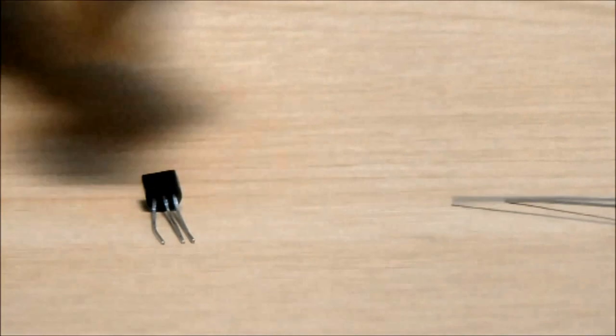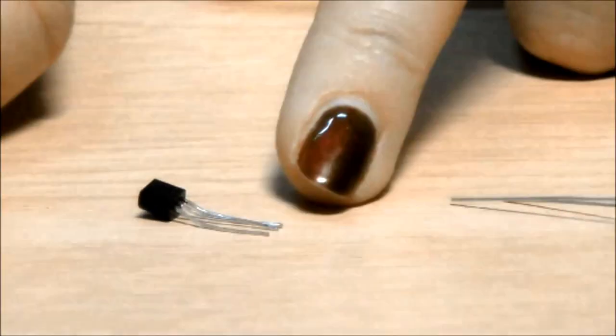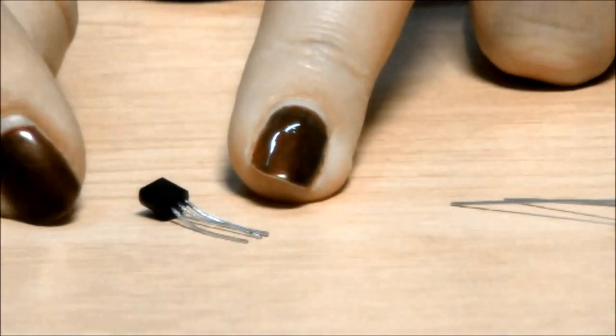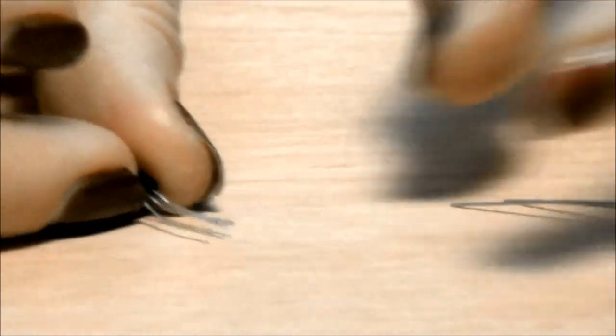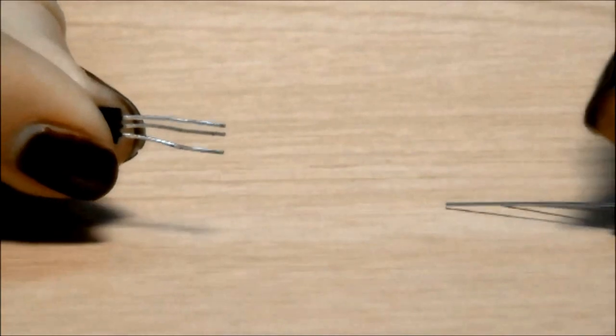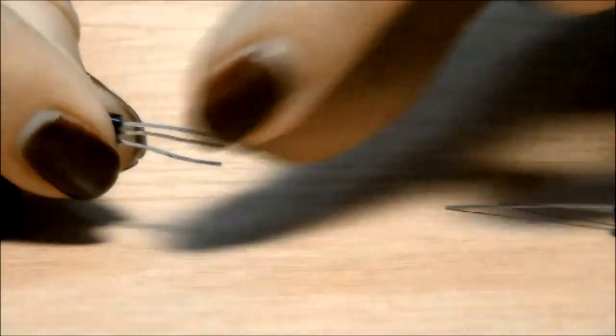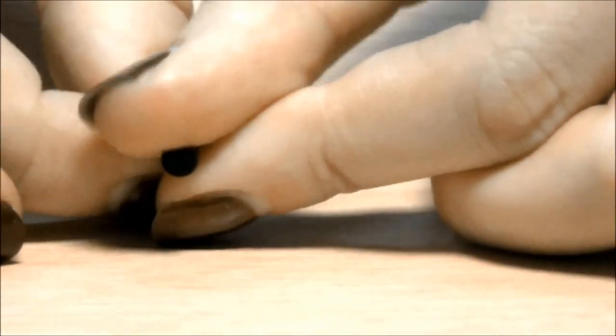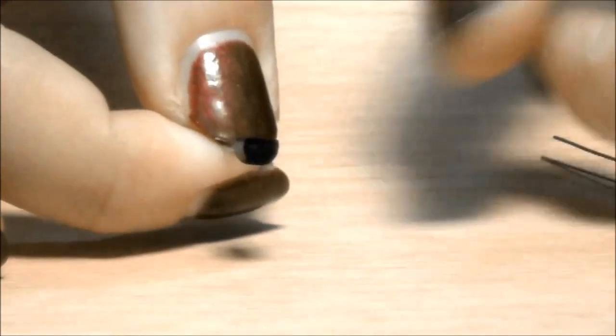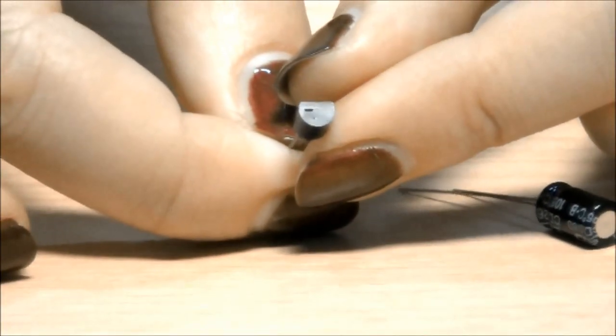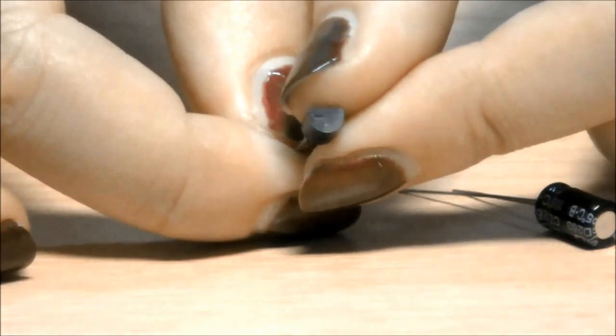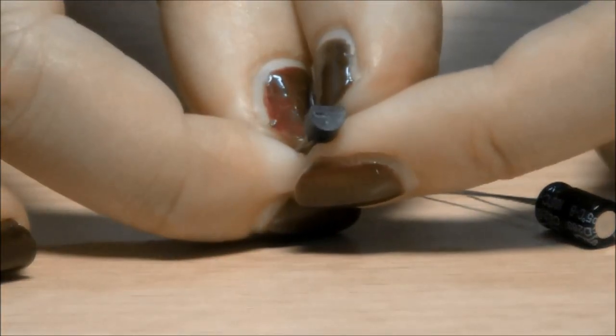Finally we have a bipolar junction transistor. Other types are available. This is just one I got out of my component box. It's got three terminals so we've got one for the base, one for the collector and one for the emitter, and you need to check your data sheet to identify which terminal is which. You can tell which way around to identify it because it will have a flat edge and a rounded edge, and that's used to identify the pins.